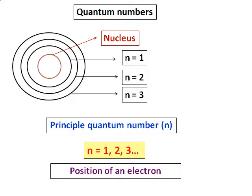What is the principal quantum number basically? Suppose you have a building with different levels — say 4 floors — each floor is given a number 1, 2, 3. It is similar to that. Here also, we give the different levels around the nucleus the numbers 1, 2, 3, and the energy of the level increases as it goes farther from the nucleus. So n = 1 has the lowest energy level, and n = 3 has higher energy than n = 2. The principal quantum number gives the position of an electron in analogy to a building with different floors.